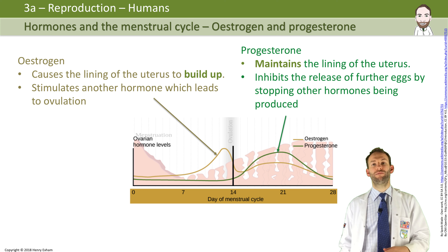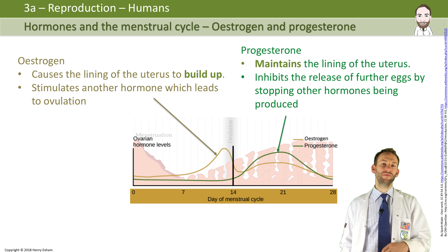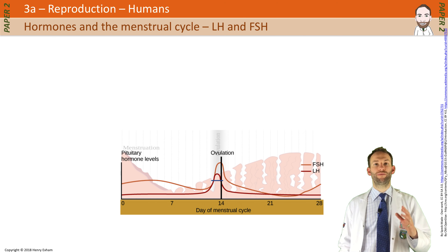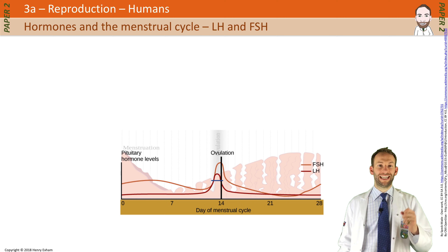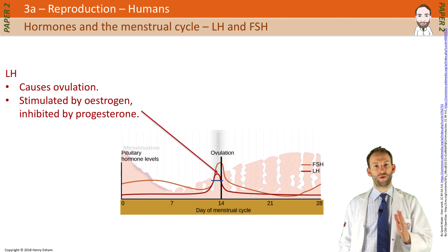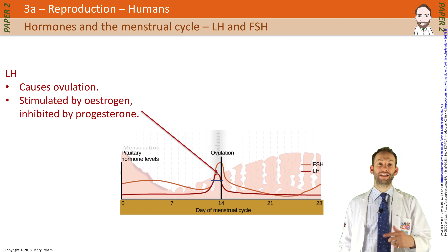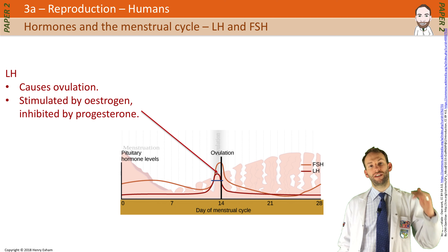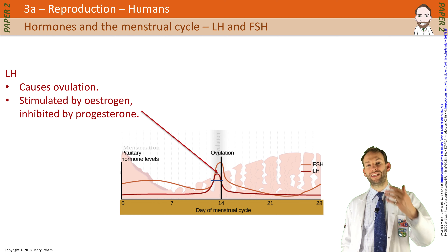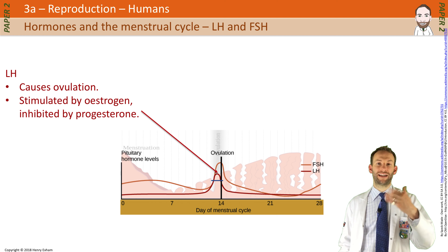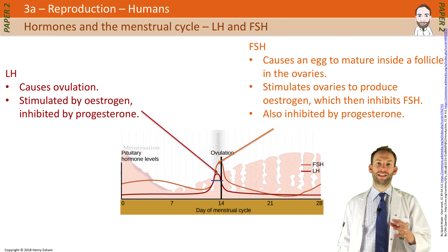LH and FSH are both produced by the pituitary gland in the brain. LH spikes to cause the egg to be released at ovulation, and it gets stimulated by estrogen — so estrogen goes up first, that causes LH to be released, and then that causes the egg to be released. FSH increases in order to get an egg to mature in the ovary.